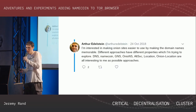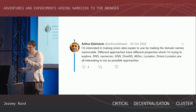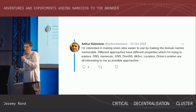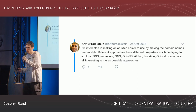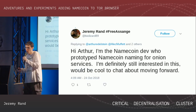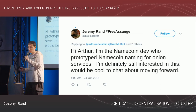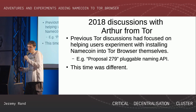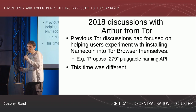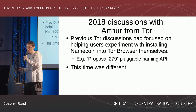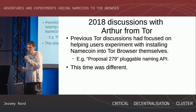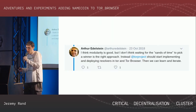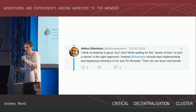This happened because I ran into a Tor Browser developer, Arthur Edelstein, in October of last year on Twitter. I subscribed to an RSS feed of all the Twitter search results for Namecoin to see what people are saying about us, and I happened to see Arthur saying he was interested in making onion sites easier to use by making domain names memorable, and he mentioned Namecoin as a potentially interesting approach. So I replied: 'Hi, I'm the Namecoin dev who prototyped Namecoin naming for onion services. Definitely still interested. Would be cool to chat about moving forward.' Arthur's approach was different from previous discussions — he said Tor projects should start implementing and deploying resolvers in Tor and Tor Browser, and then we can learn and iterate.